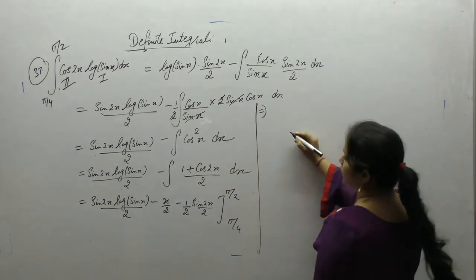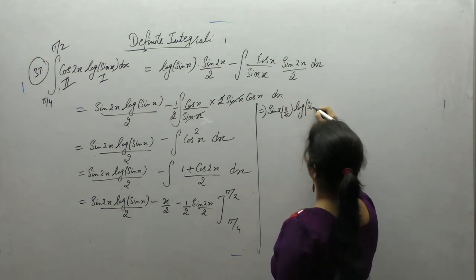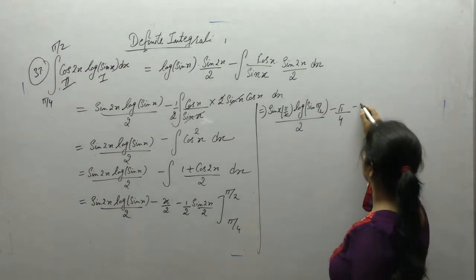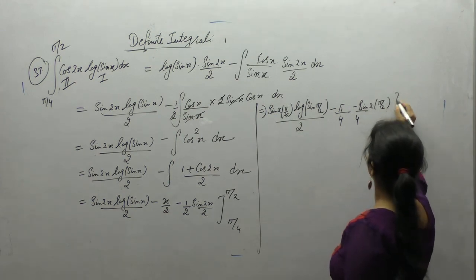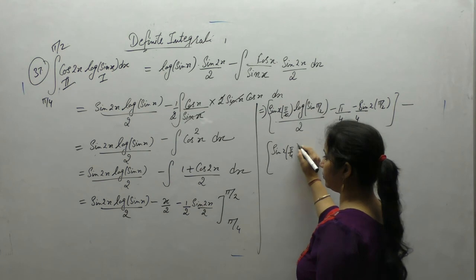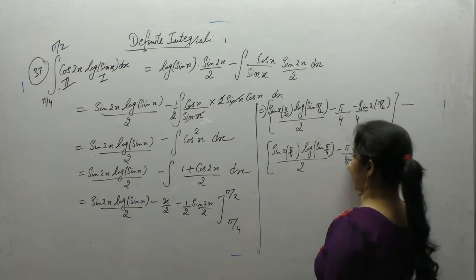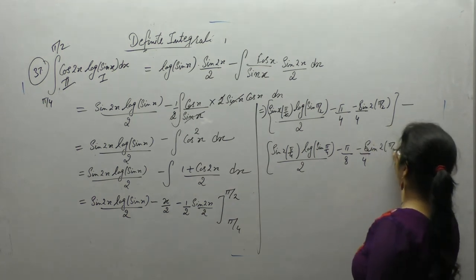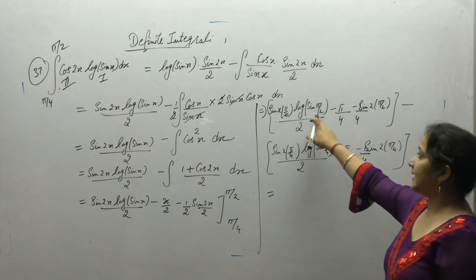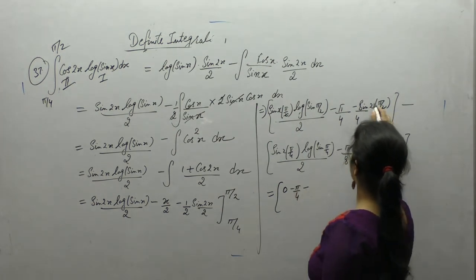Upper limit: sin(2 · π/2) · log(sin(π/2)) upon 2 minus π/4 minus sin(2 · π/4). Lower limit: log(sin(π/4)) upon 2 minus π/8 minus 1 by 4 · sin(2 · π/4). Sin 180° is 0, so 0 into log 1 is also 0. Zero into something is 0. Minus π by 4, and sin π is again 0.